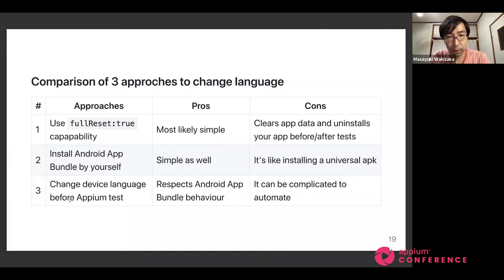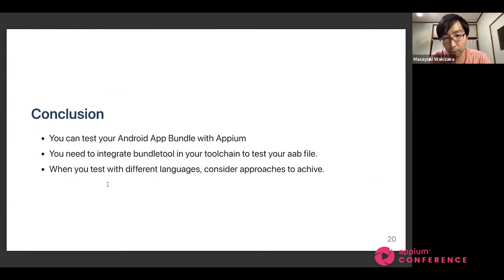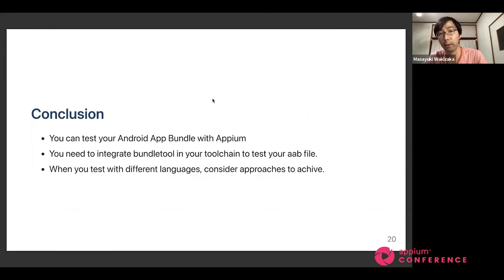This is a comparison page of the three approaches to change device languages. I'm learning all the time, so I will probably share this slide later — please check out the slides. In conclusion, I explained how to automate Android App Bundle testing with APM. You need to keep in mind that you need to integrate bundle tool into your tool chain to test your Android App Bundle file. Also, you need to consider how to change your device language. That's all for my talk. Thank you for listening.